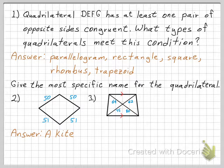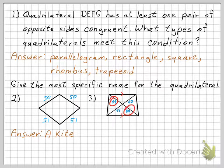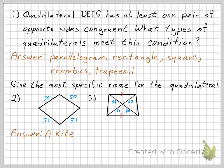For problem three, we need the most specific name for the quadrilateral. Notice that there is only one pair of parallel sides. We also notice that 75 plus 62 does not equal 64 plus 80, so the diagonals do not bisect each other — therefore it's not a parallelogram, and cannot be a rectangle, rhombus, or square either. But since we do have one pair of parallel sides, it is a trapezoid.